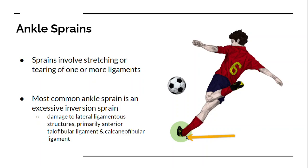As the player is planting, they are excessively inverting the subtalar joint, which can cause damage to the lateral ligaments — primarily the anterior talofibular ligament and the calcaneofibular ligament.